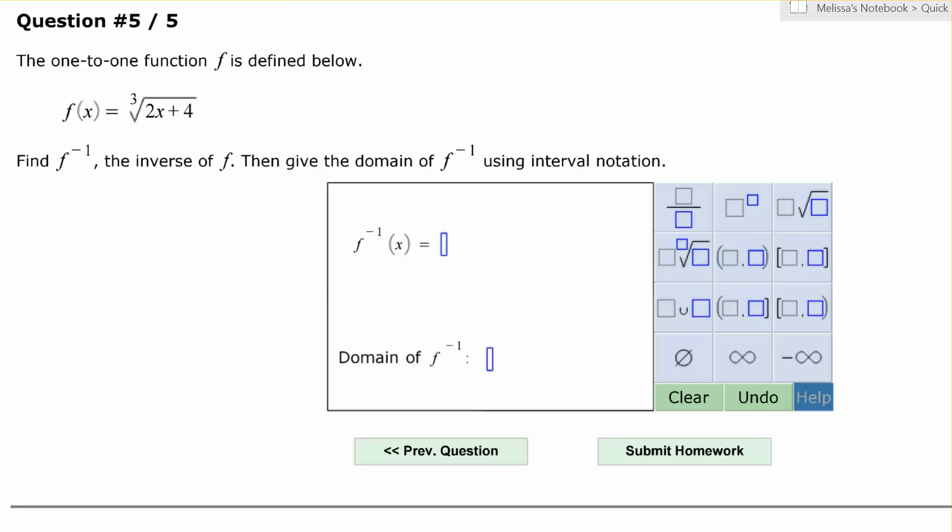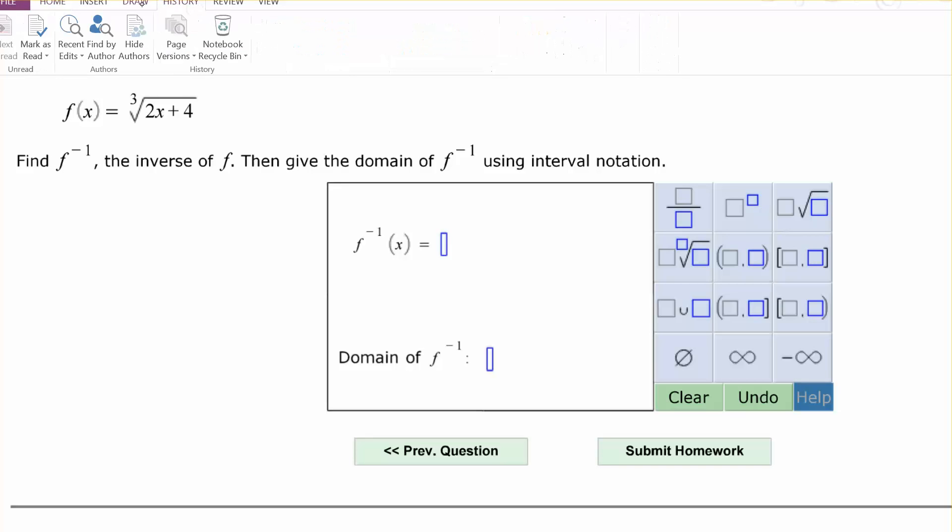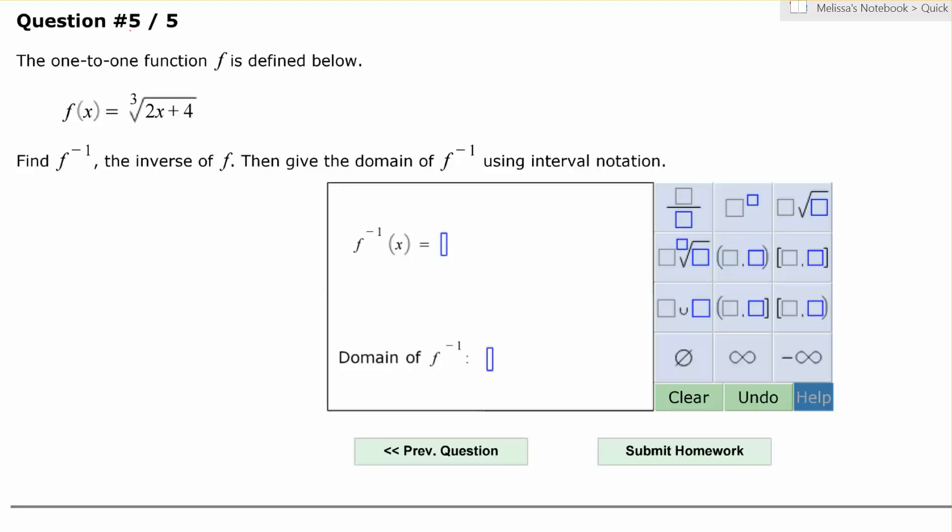The one-to-one function f is defined below as f(x) equals the cube root of 2x plus 4. We're going to find the inverse of the function and find the domain of the inverse function using interval notation.